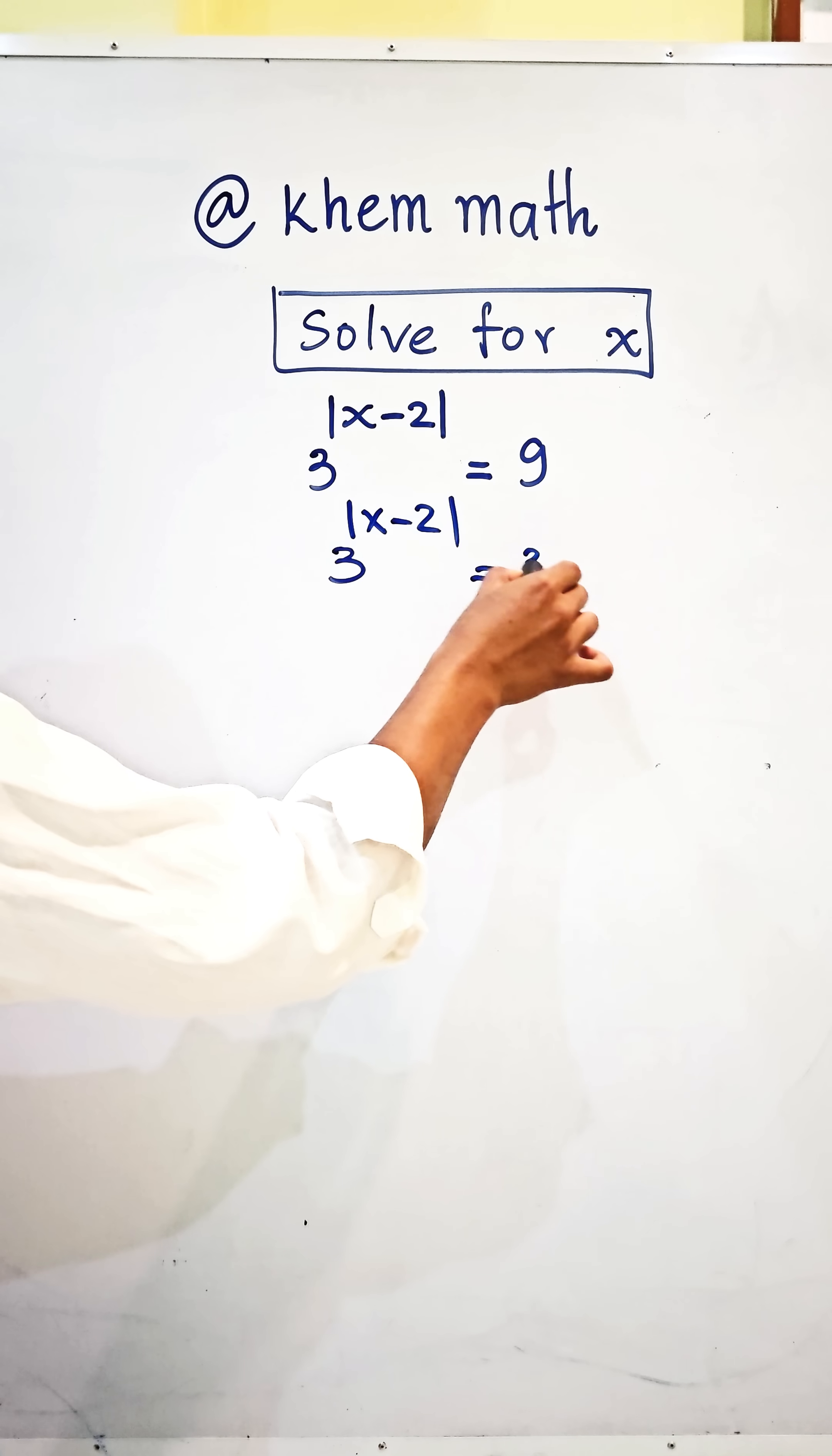Look, here the exponent, the base 3 is the same on both sides. So when the bases are the same, we get exponent equals exponent. We get this absolute value of x minus 2 equal to 2.